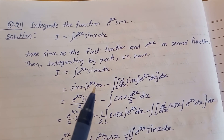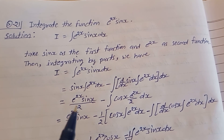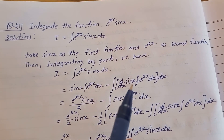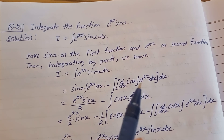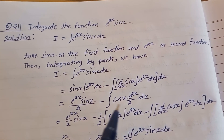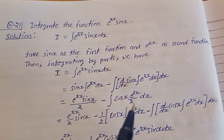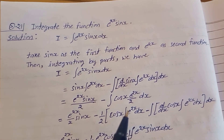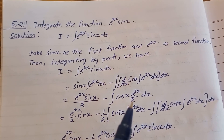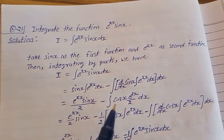The integration of e^(2x) is e^(2x)/2. So we get e^(2x)·sin(x)/2, minus the integration of: the differentiation of sin(x) is cos(x), and the integration of e^(2x) is e^(2x)/2. Taking 1/2 common, we have the integration of cos(x)·e^(2x)/2 dx.